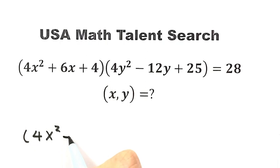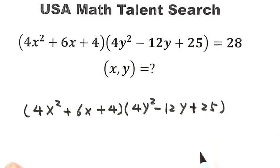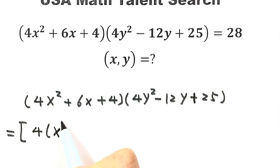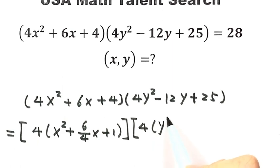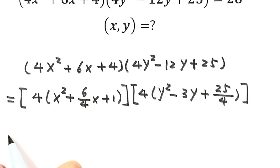On the left hand side we have 4x squared plus 6x plus 4, and y squared minus 12y plus 25. Let's work on the first part and take out the coefficient before x squared, giving us 4 times (x squared plus 6/4 x plus 1). Then do the same thing for the y terms: take out the coefficient before y squared, giving y squared minus 3y plus 25 over 4.